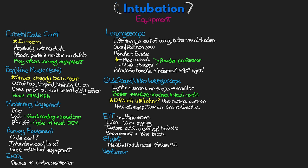Next is the ventilator — respiratory will be handling this, but it's good to know we want the vent ready to go so that once we're intubated we can hook it up immediately. Initial settings will be put in and the vent will be on standby mode. Depending on the situation, the vent itself may or may not be in the room during the intubation, but ideally we'd have it in there ready to hook up immediately.